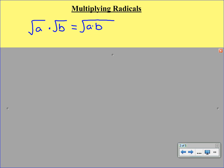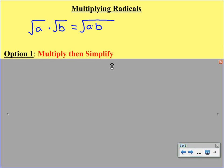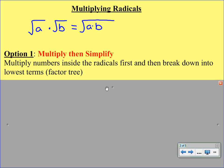When we look at a multiplying problem, there are two options or two choices that you have to make as far as how to simplify it. So option one is to multiply and then simplify. What that means is that you would multiply the numbers inside the radicals first and then break them down. So basically you would start with two separate square roots, you would multiply them together, and then whatever number you got under the radical, you would break that down.